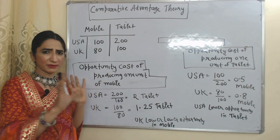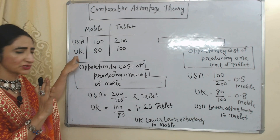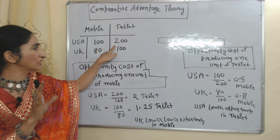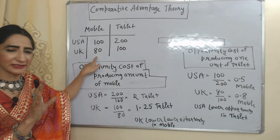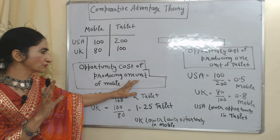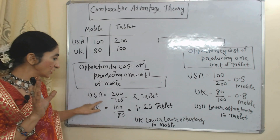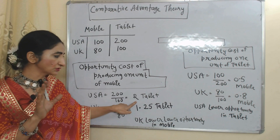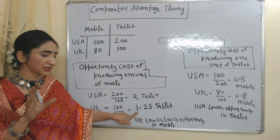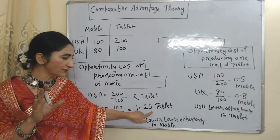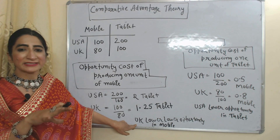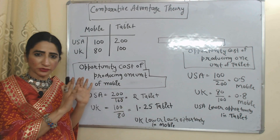With the help of an example, we will understand this theory. We have two countries, USA and UK, producing two goods: mobile and tablet. USA can produce either 100 mobiles or 200 tablets. UK can produce either 80 mobiles or 100 tablets. In order to produce one mobile, USA has to sacrifice 2 tablets. In order to produce one mobile, UK has to sacrifice 1.25 tablets. So UK has lower opportunity cost in production of mobile, and UK should increase production and export of mobile.